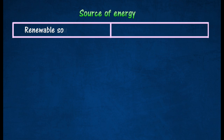Renewable energy sources are those which are continually being replaced. Non-renewable sources of energy is an energy source that is being used faster than it can be replaced. It will eventually be depleted.